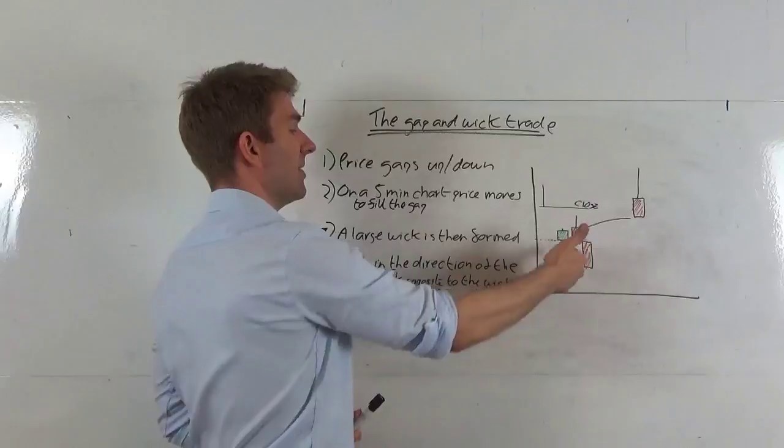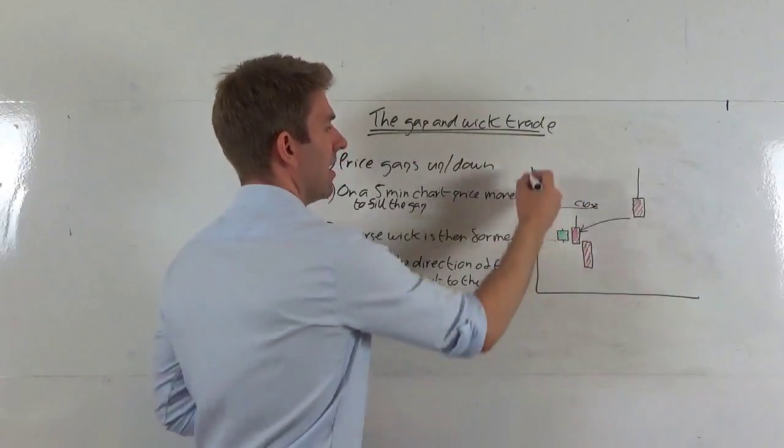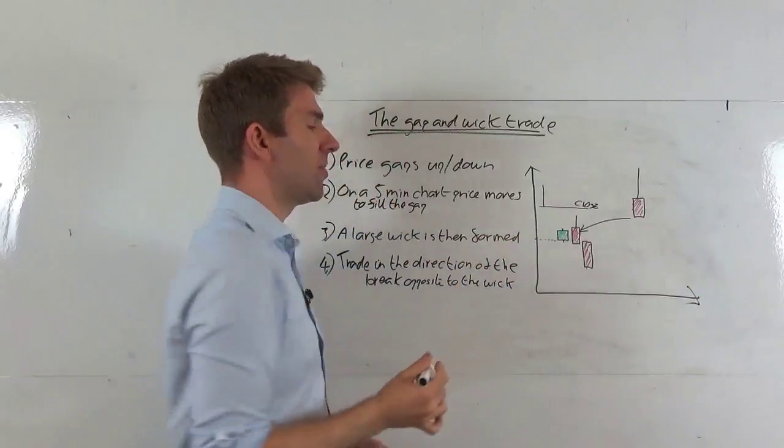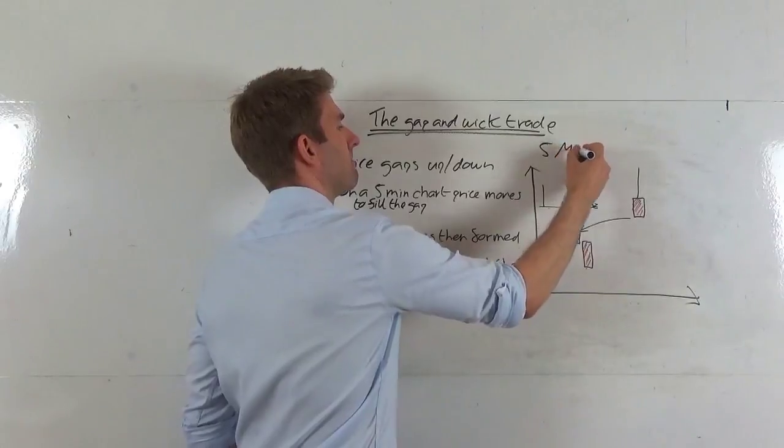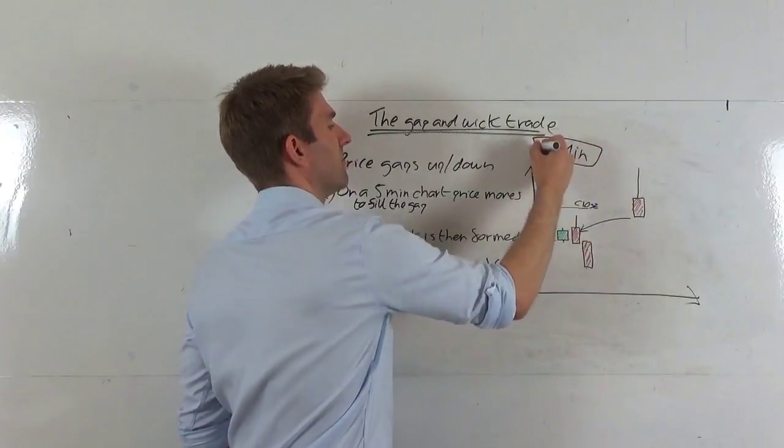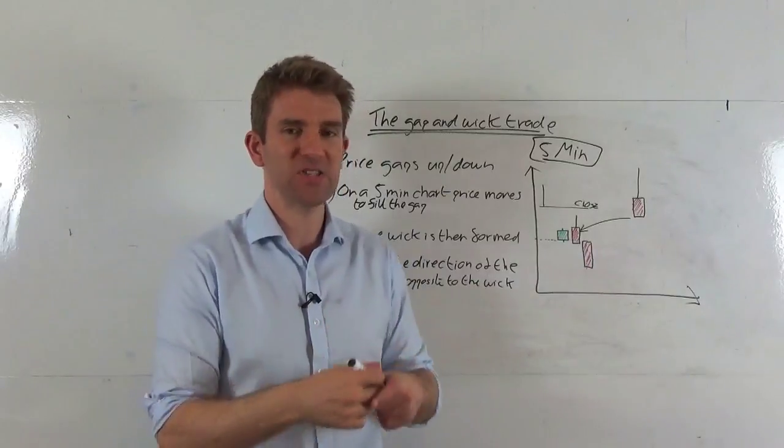So we get a gap down and we get an open. Now I'm just mirroring, that's the close price there, whatever that may be, whatever stock we're looking at. We get an open. Now we get the first five minutes. This is a five-minute chart, by the way. Works best on a five-minute because we want to get early enough on it that we don't miss the move.